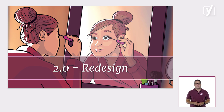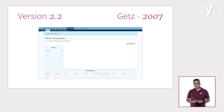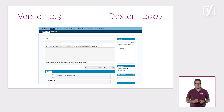The first significant redesign of the backend user interface came at version 2.0, named after Duke Ellington, in 2005. In the two years that followed, the updates focused on fixing bugs and security issues. In the 2.2 version of 2007, WordPress got its widgets. Its successor, version 2.3, called Dexter, made it possible to add tags to posts.